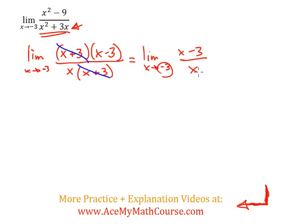I can actually just plug in the negative 3 for x. So I get negative 3 minus 3 all over negative 3. Negative 3 minus 3 is negative 6 divided by negative 3. 6 divided by 3, positive 2.